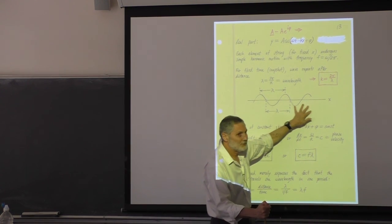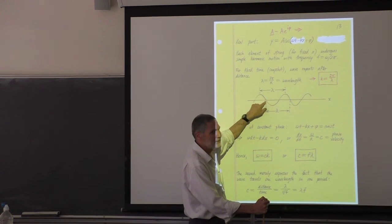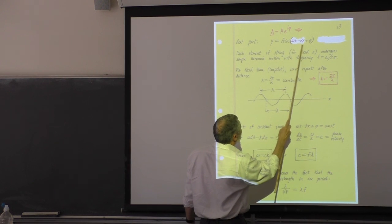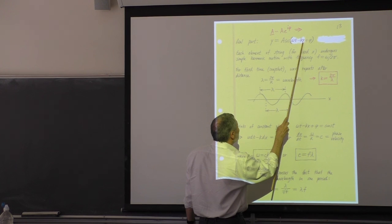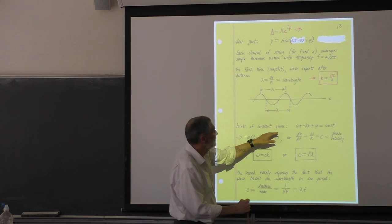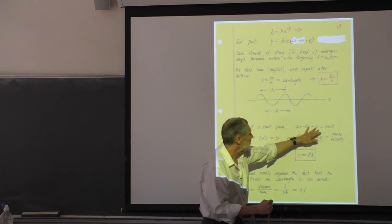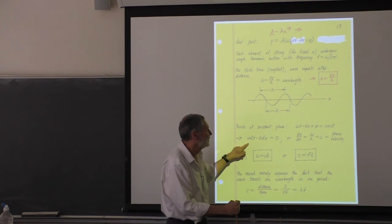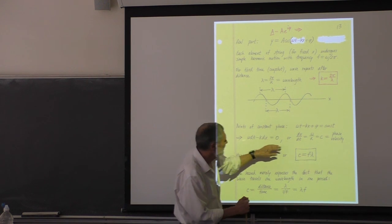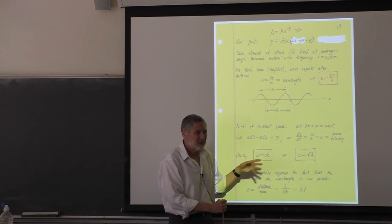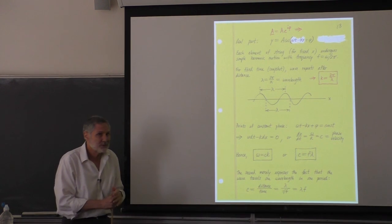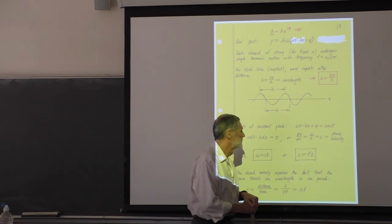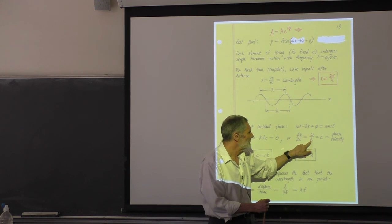Let's follow a crest or any point on the wave — that means keeping the argument kx minus omega t constant. As time is incremented, we track what happens to x to keep it constant. Taking the differential, we get dx/dt equals omega over k. We know that velocity is c, so c equals omega over k. People write this as omega equals ck.